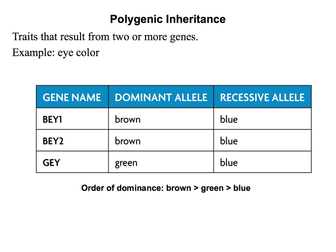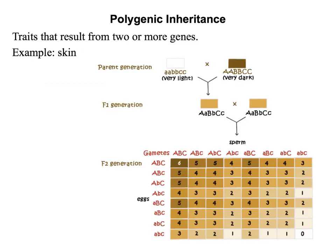Polygenic inheritance — we won't do a cross for this, it's more a definition to know. These are traits that result from two or more genes. Instead of one allele determining a trait, several genes are involved. A great example is eye color, which involves three genes. Dominance is also trickier with polygenic inheritance. Another example is skin color — a parent with very light skin crossed with a parent with very dark skin produces a blended F1 generation, and then many combinations appear in the F2 generation.